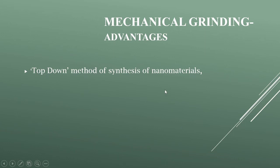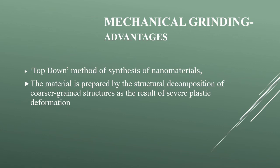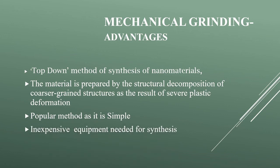The main advantages are: it is a top-down method; the metal is prepared by structural decomposition of coarser grain structures. It is the most popular method because it is very simple and does not require expensive equipment for synthesis. The major advantage is that tons of material can be easily synthesized for various industrial applications.